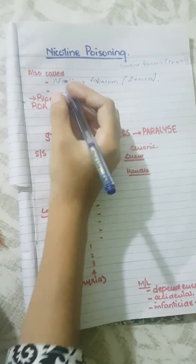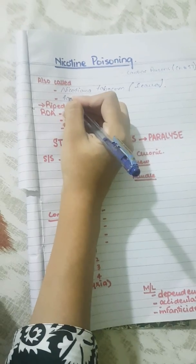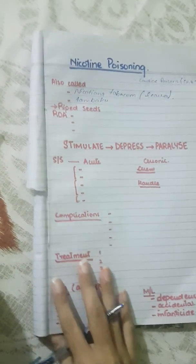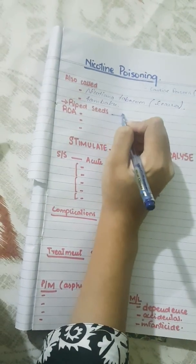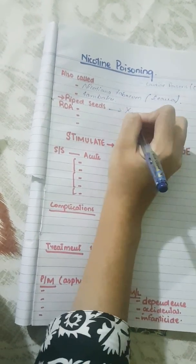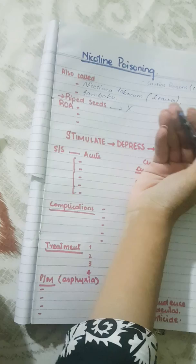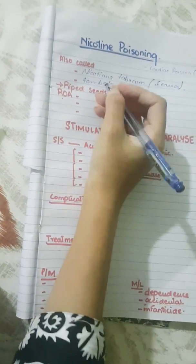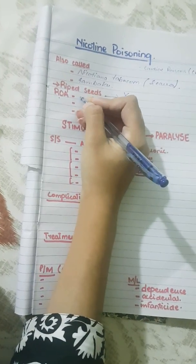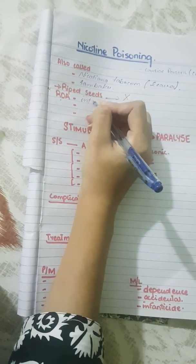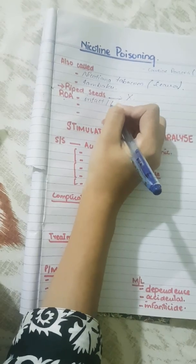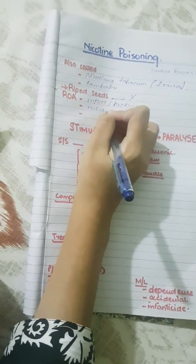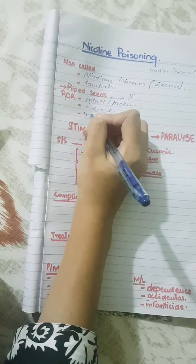The dried leaves are also known as tambaku in Hindi or Urdu. The ripe seeds do not contain the alkaloid nicotine or the active principle. The routes of administration include intact or broken skin, inhalation, and ingestion.